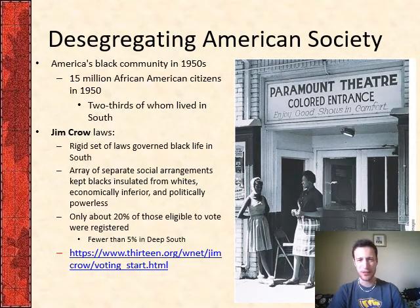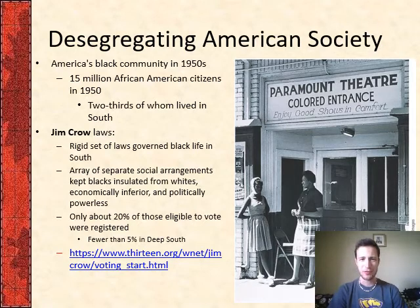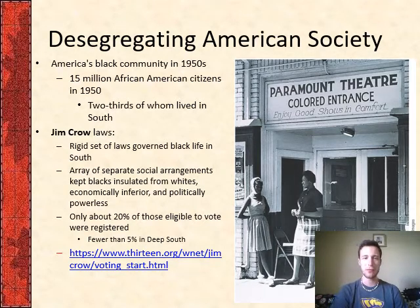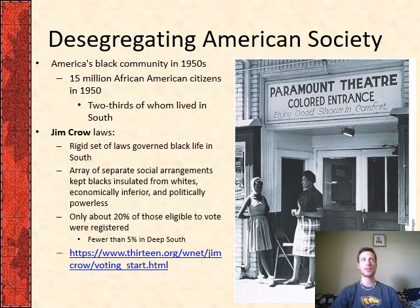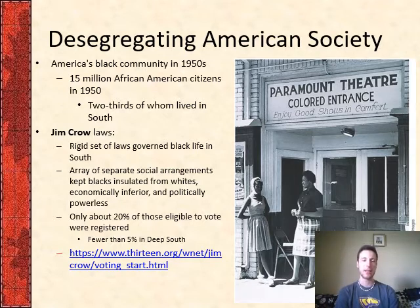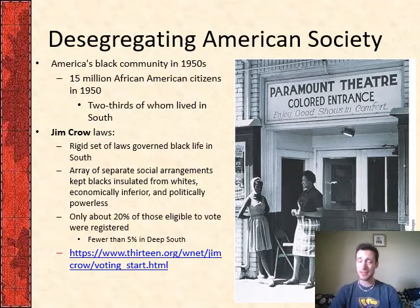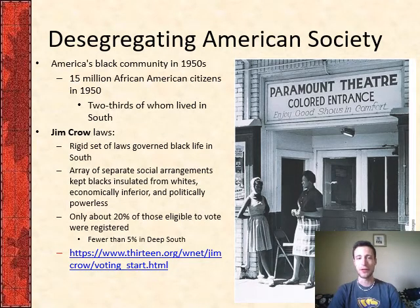If you're unfamiliar with Jim Crow laws, there's a variety of different social arrangements that tried to keep blacks insulated from whites — or a better way to think about it, they wanted to protect white people from integrating with African Americans. Both intentionally and also as a side effect, this led to economically inferior and politically powerless positions for African Americans.